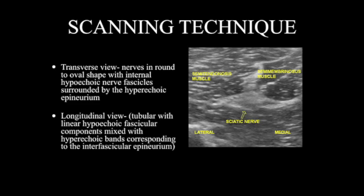Scanning technique is very important. You have a transverse and a longitudinal way of scanning with the probe. In the transverse approach, the nerves appear more rounded or oval-shaped — you're cross-sectioning the nerve and may see the fascicles inside the bundles. The longitudinal view is the long view, in which you're going along the nerve and will see a linear pattern of hyperechoic fascicular components with bands corresponding to the interfascicular epineurium.